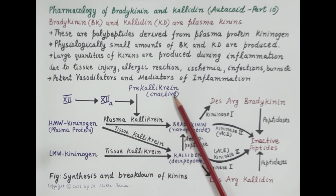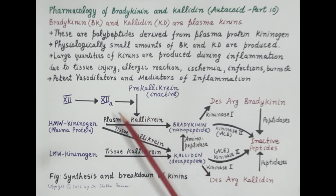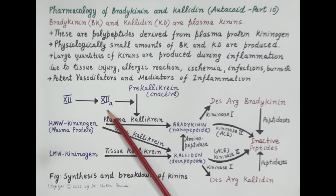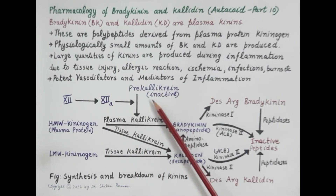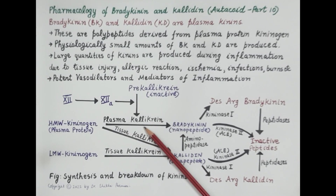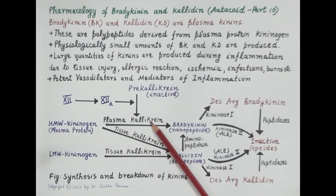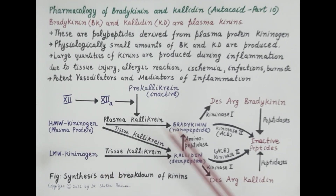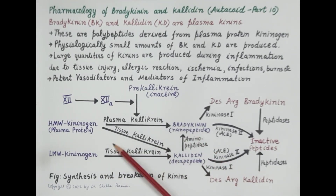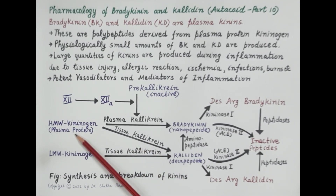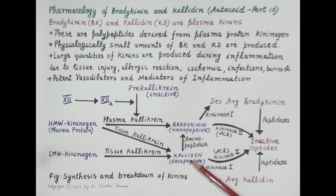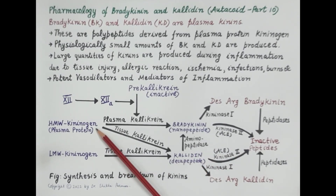An inactive enzyme called pre-calicrine is present in the plasma. It is activated by clotting factor 12a to its active form, calicrine. Plasma calicrine converts high molecular weight kininogen to bradykinin, while tissue calicrine converts both high molecular weight and low molecular weight kininogen to calidin. So bradykinin and calidin are both produced from kininogen present in the plasma.